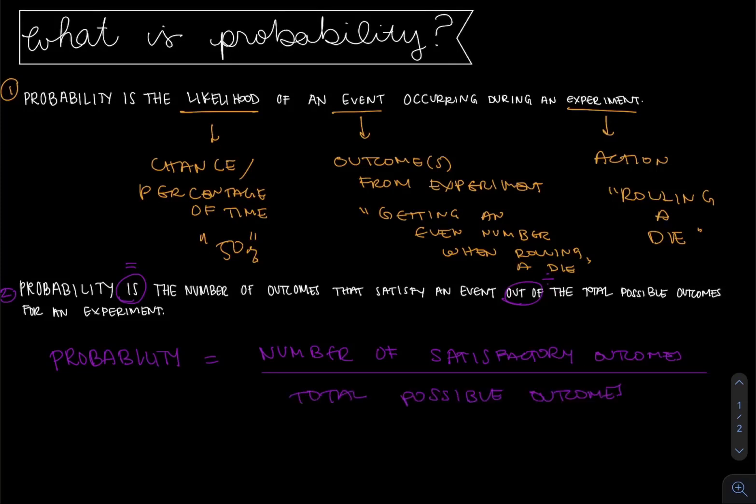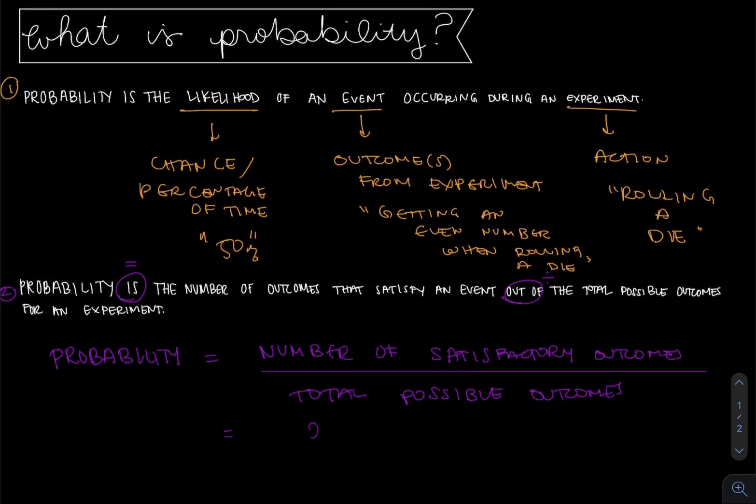Let's look at that example in orange actually now because I think it's important to understand these phrases before we move on. So if the number of satisfactory outcomes for this example we have above, getting an even number when rolling a die, well an even number would be two, four, or six.